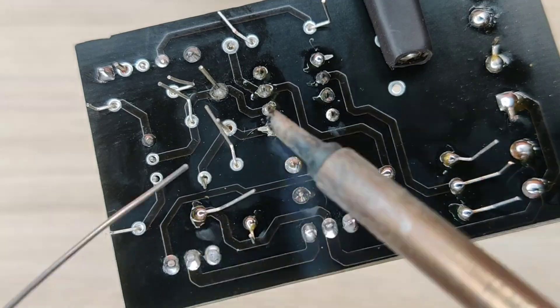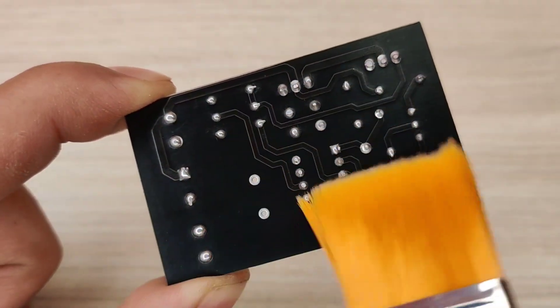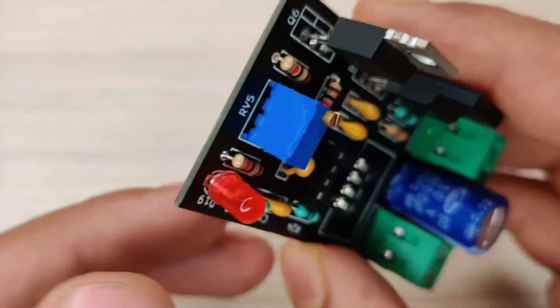And after spending some time with the soldering process, I cleaned the PCB with isopropyl alcohol. And here our PCB is looking nice and clean.